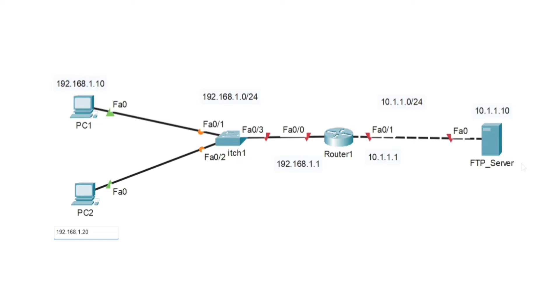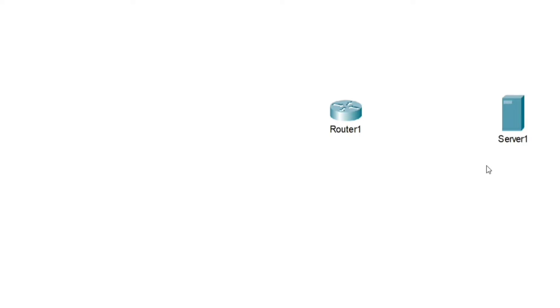We'll learn how to perform a lab of FTP — File Transfer Protocol — in Packet Tracer. First of all, let me design a small topology. I am going to take one router and one server for FTP. Let's say this is my FTP server — let me change the name to 'FTP Server'.